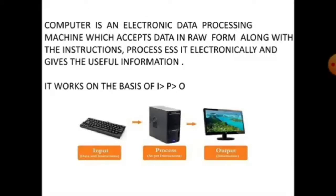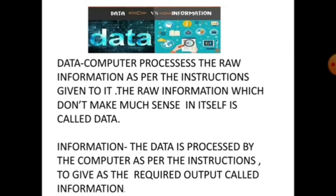As you all know, computer is an electronic data processing machine. In its raw form, data input along with the instruction processes it electronically and gives the useful information. Here we have two words with similar meaning but different alphabets: raw data and information. Let's take one example.